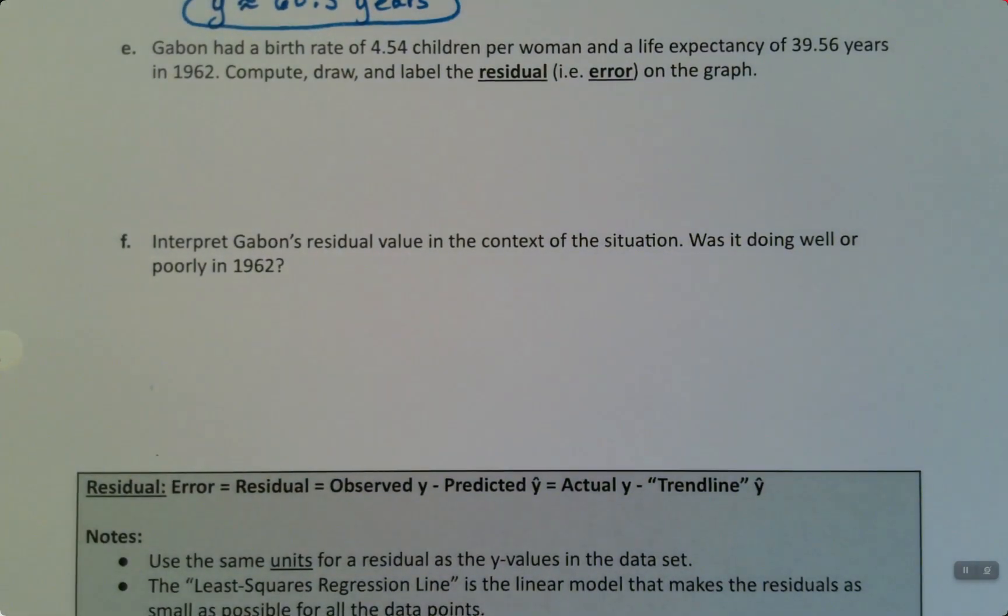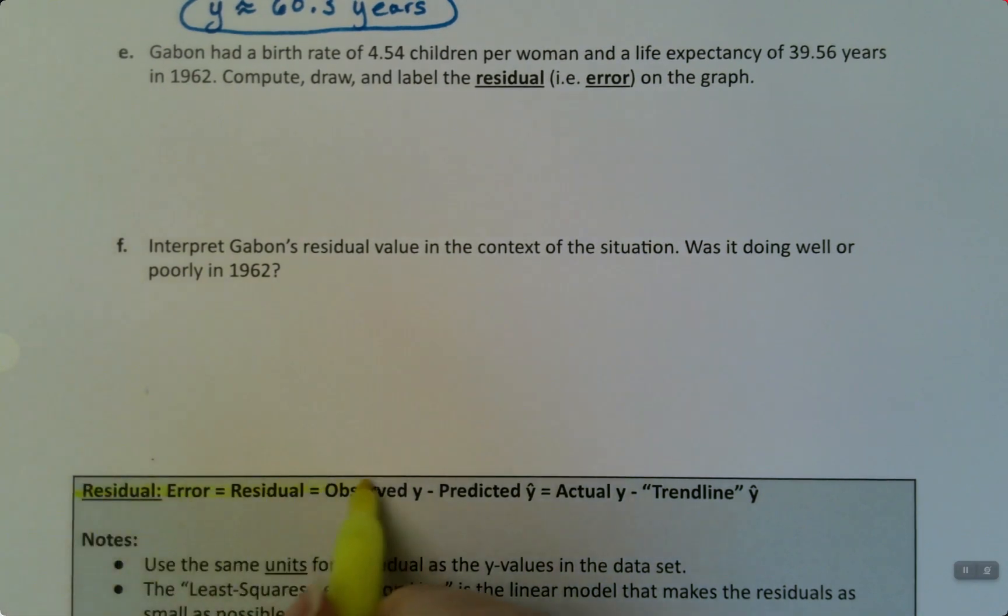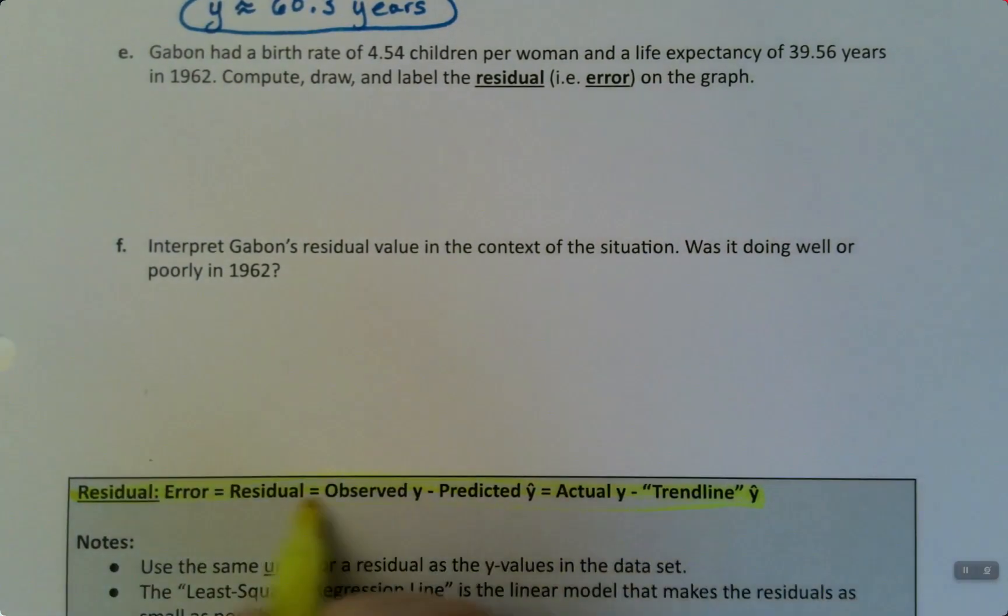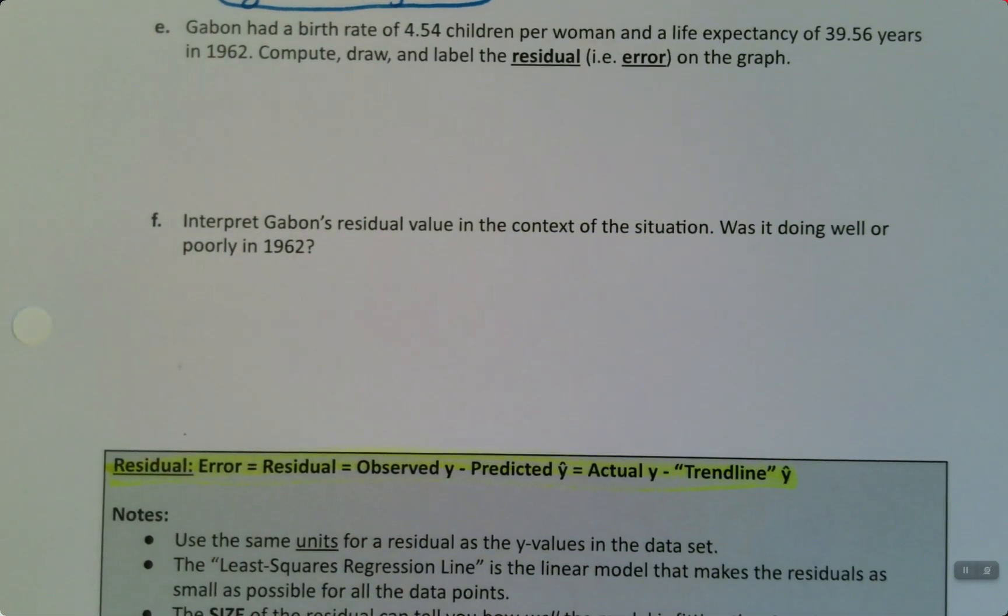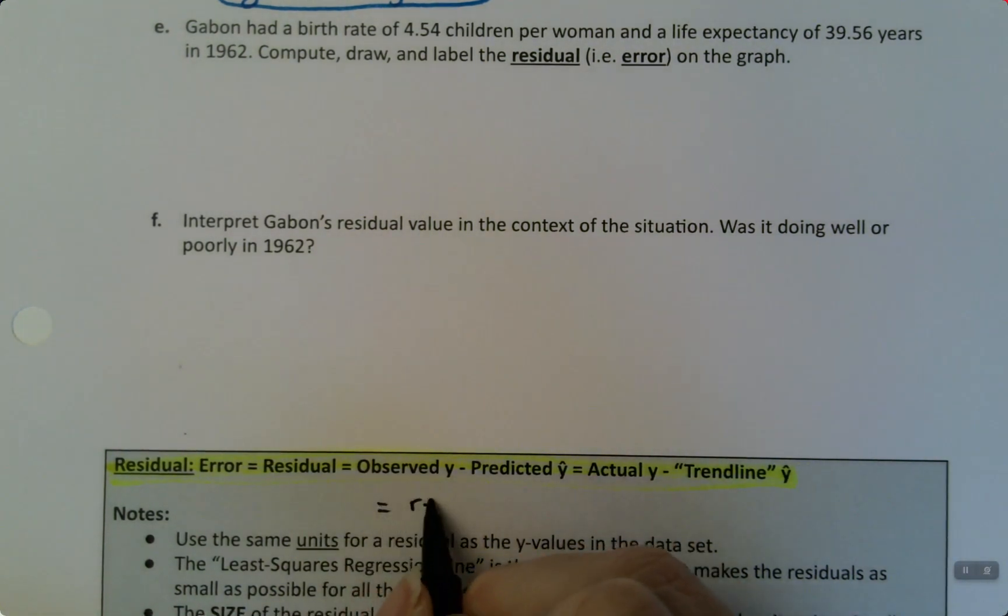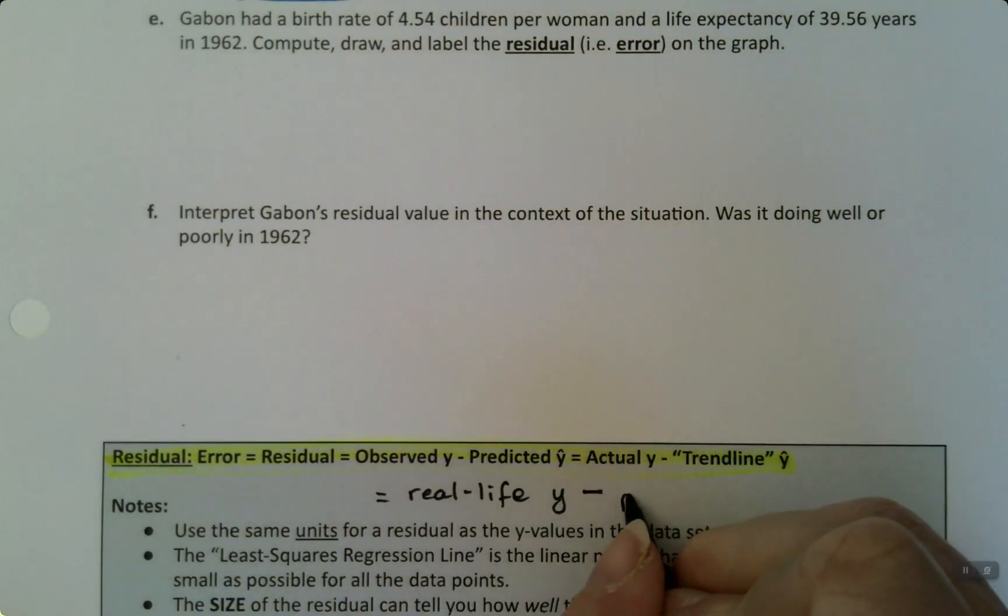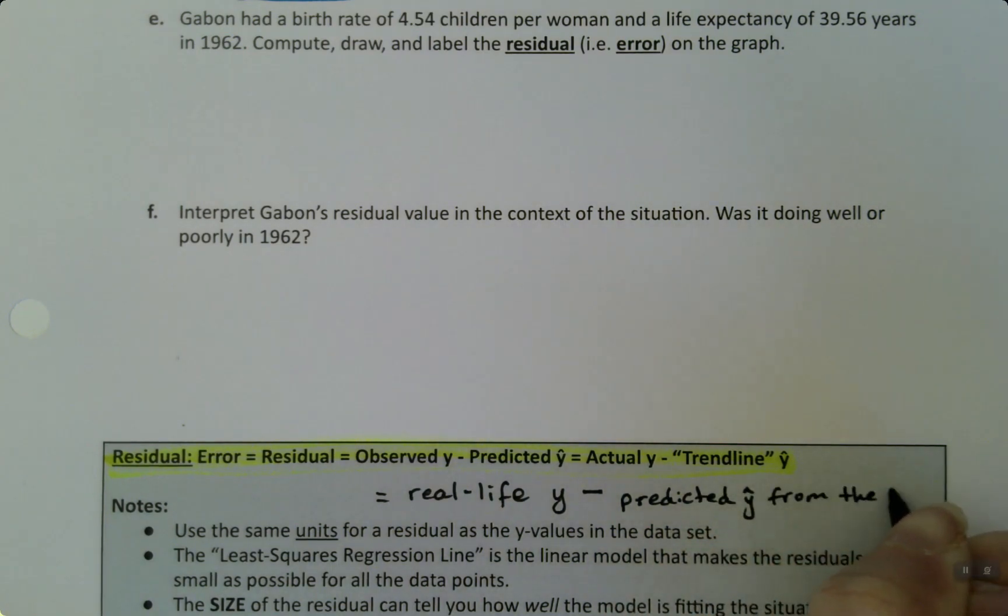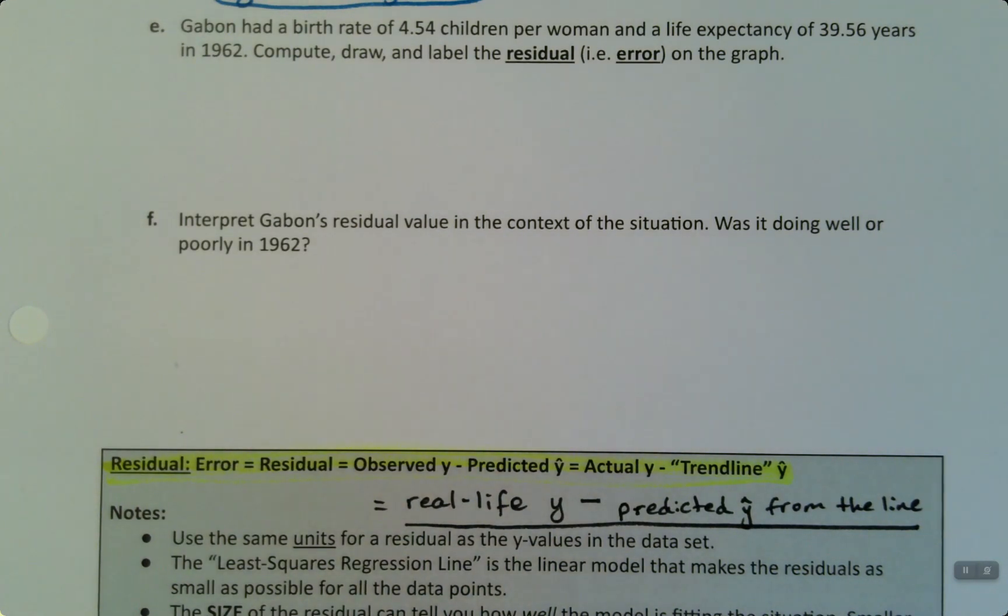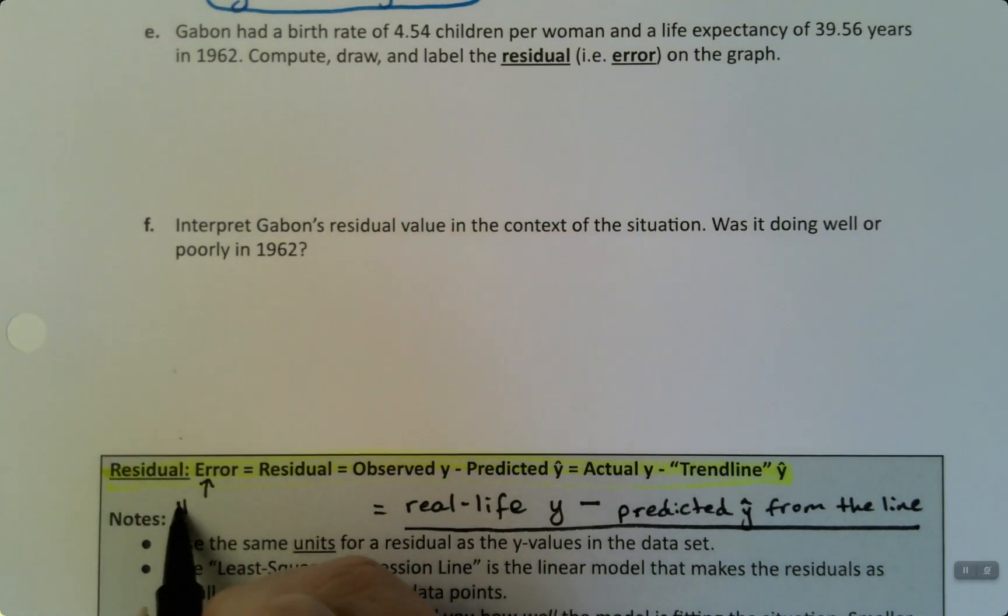So residual, what is that? Well, I kind of put it out of order here, but there's a formula right here for residual. Residual is the real-life value minus the predicted value. So this is the real-life y value minus the prediction from the line. So prediction, predicted y-hat from the line. That is what a residual is. It's just, hey, how off were you? That's all this is. It's the fancy bit of, that's what I mean by error. It's just how off, right?